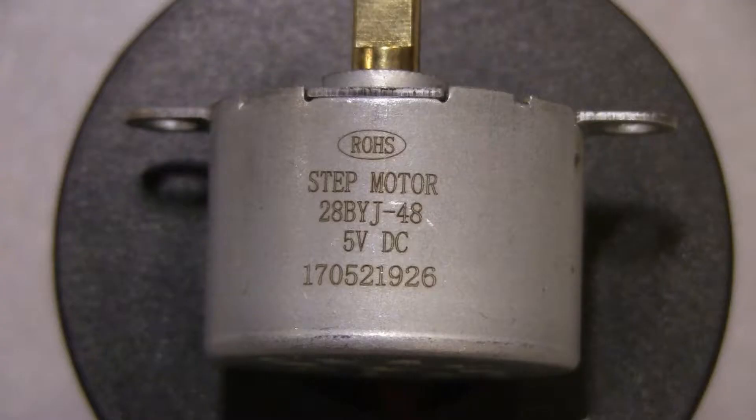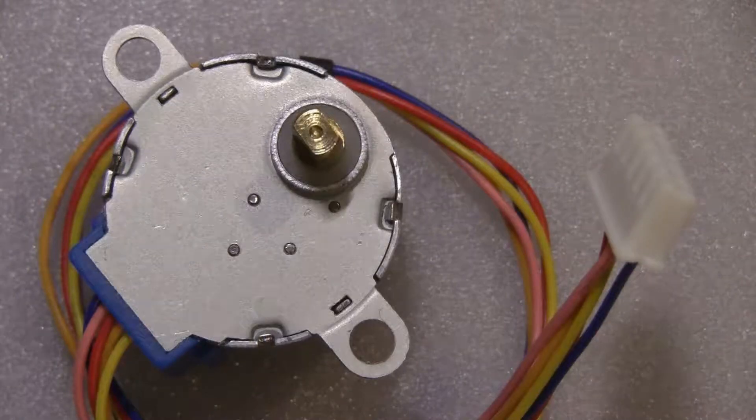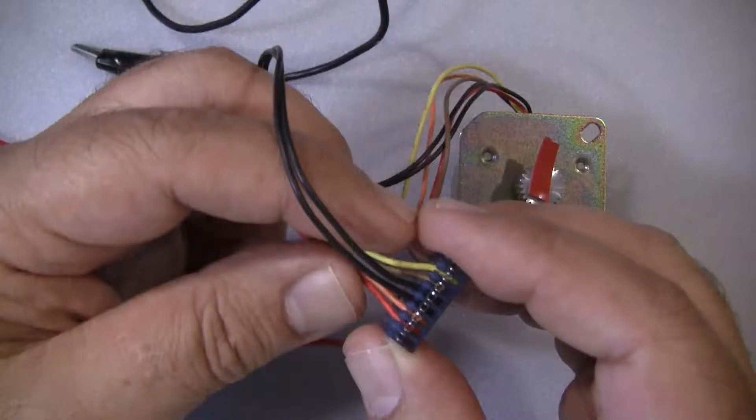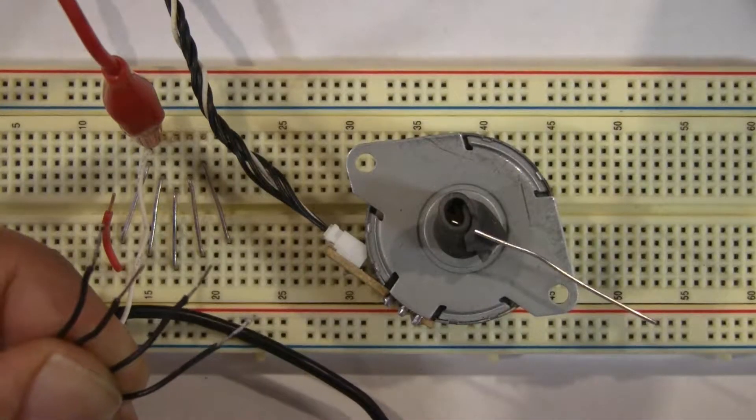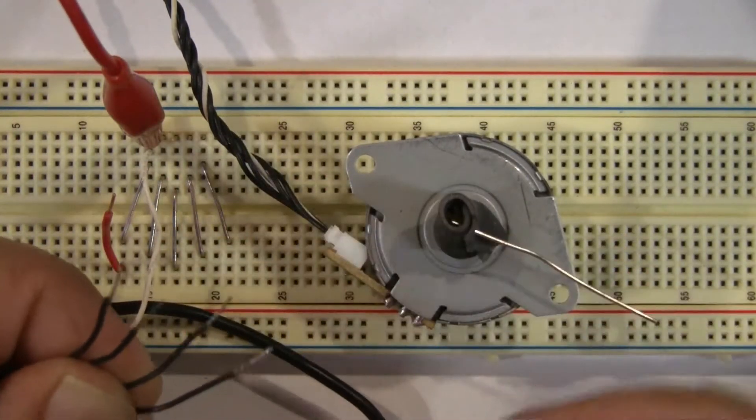We recognize a unipolar stepper motor because it has 5 or 6 wires. In either case, 4 wires are ground and the rest 1 or 2 are positive or 5-volt current.